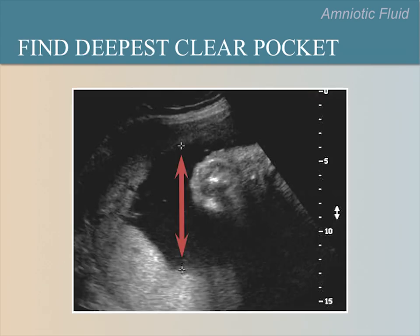Look through the entire amniotic sac to find the deepest pocket and measure the depth. Notice that the calipers form a vertical line — meaning straight up and down — that does not cross the umbilical cord or fetal parts.